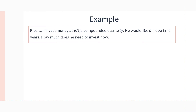Let's get into a couple of examples, because that's pretty much all the theory we need for present value since we already learned about compound interest and how it works. Our first example: Rico can invest money at 10% annually, compounded quarterly. We need to be careful because our interest rate is per year but we're compounding quarterly, so we'll have to divide our interest rate. He would like $15,000 in 10 years — how much does he need to invest right now?